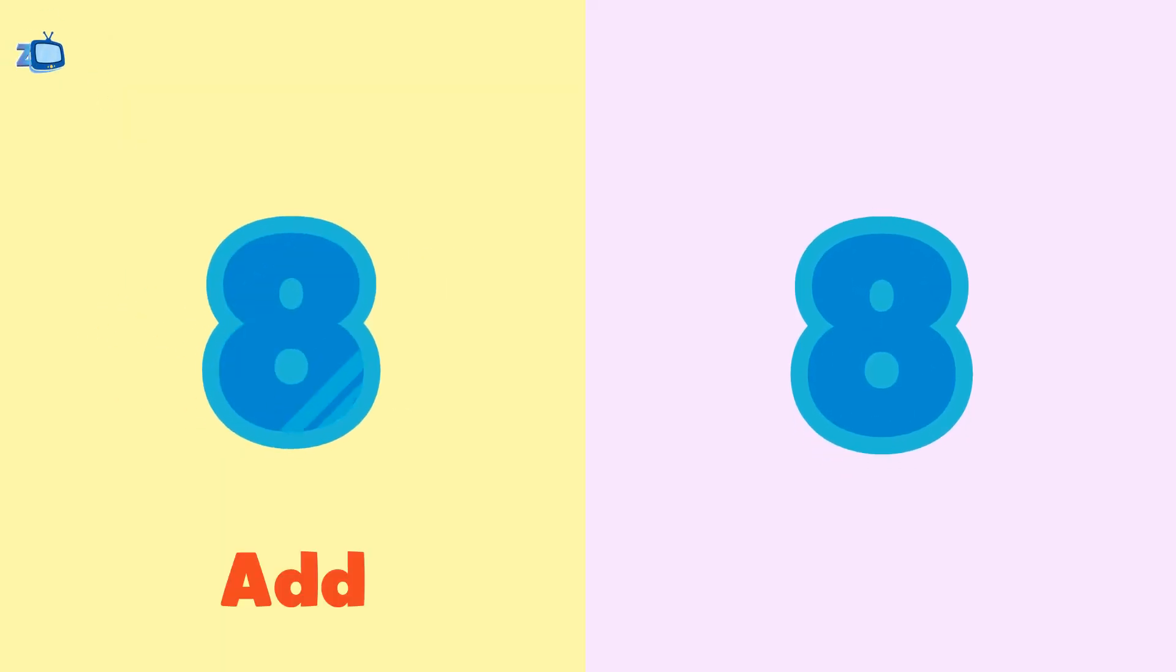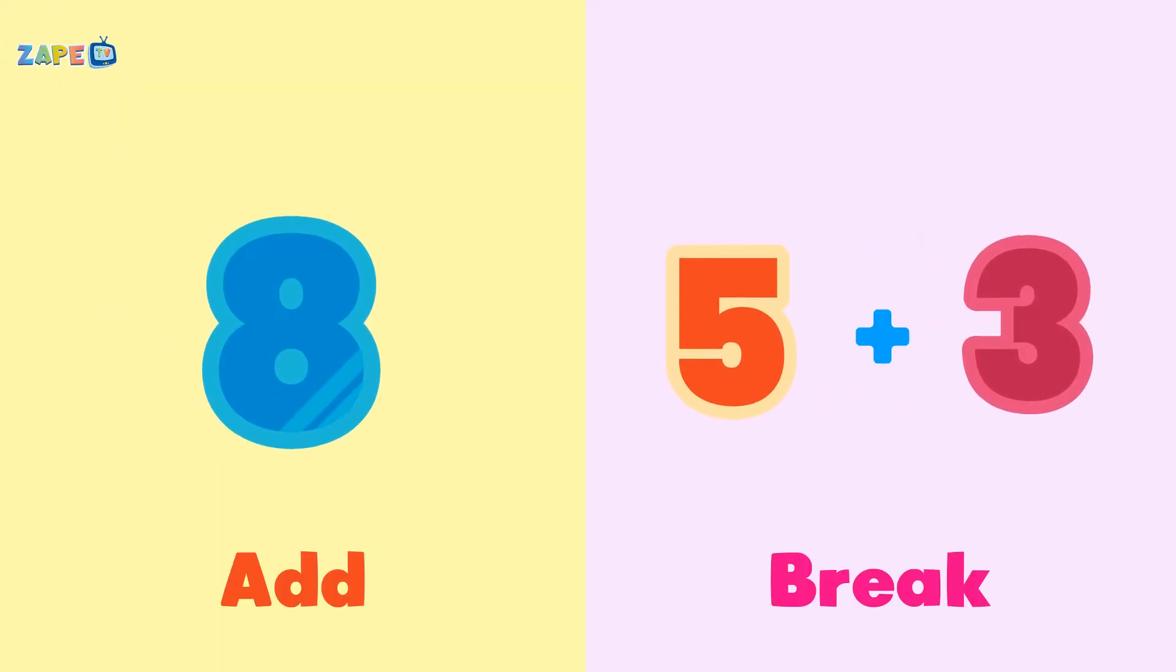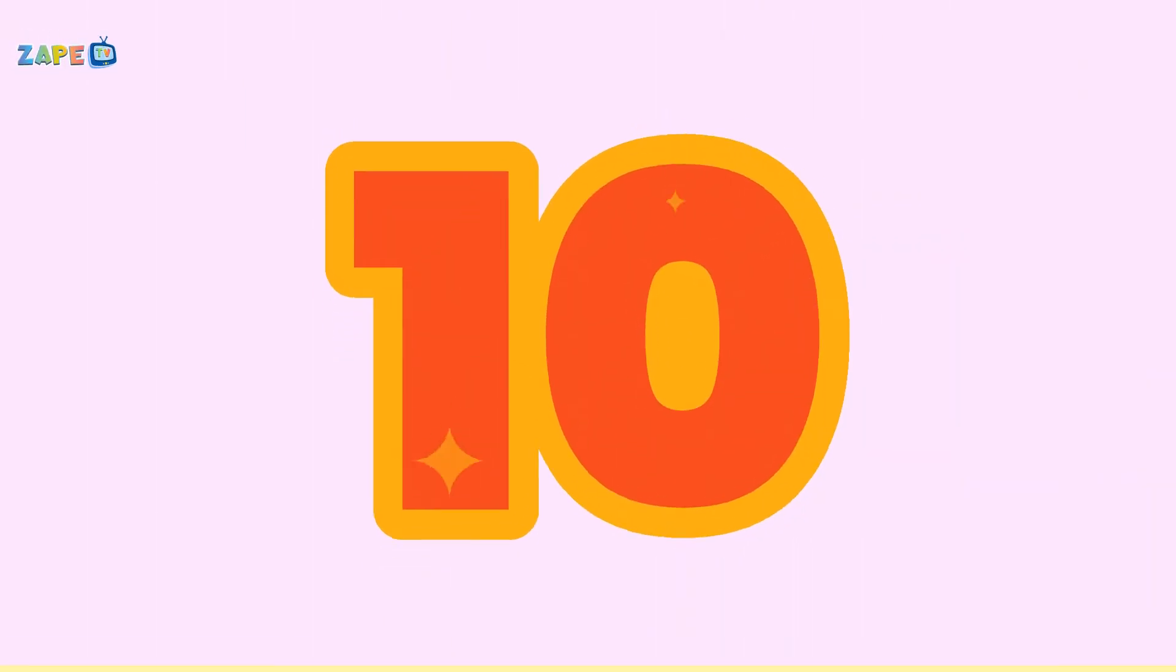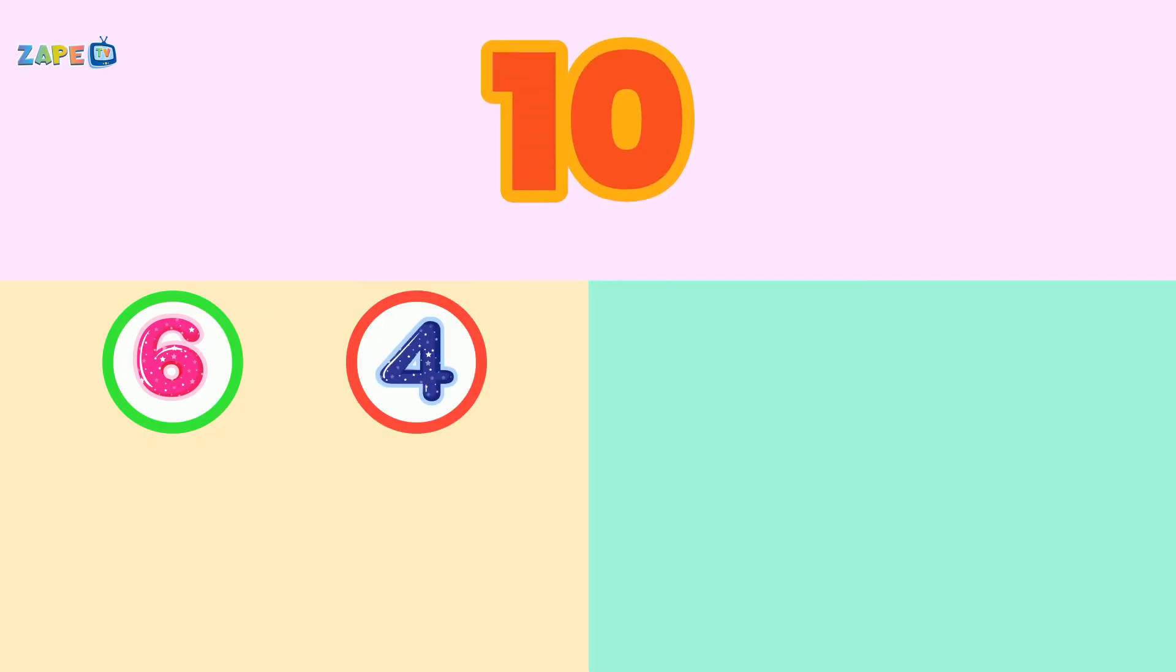Add them up or break them apart, number bonds make math an art! Now let's try 10, it's big and bright. What two parts make 10 feel just right? It's six and four, or seven and three. Just find the parts and you'll see how easy it can be.